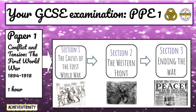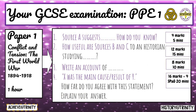Students must ensure they revise content from all three sections. Section 1 is on the causes of the First World War. Section 2 covers the war itself. Section 3 looks at the end of the war and Germany's surrender. Questions 3 and 4 require students to write analytically using only their contextual knowledge; they should spend 10 minutes on Question 3 and 20 minutes on Question 4.